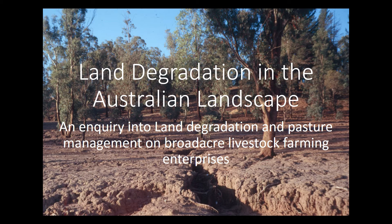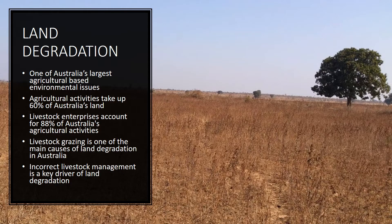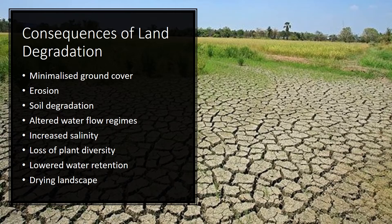Land Degradation in the Australian Landscape — an inquiry into land degradation and pasture management for broadacre livestock farming enterprises. Land degradation is one of Australia's largest agricultural-based environmental issues today, with agricultural land taking up 60% of the continent. In particular, extensive livestock grazing uses the largest amount of agricultural land, consuming around 80% of available landscapes, and is also one of the main causes of land degradation in Australia.